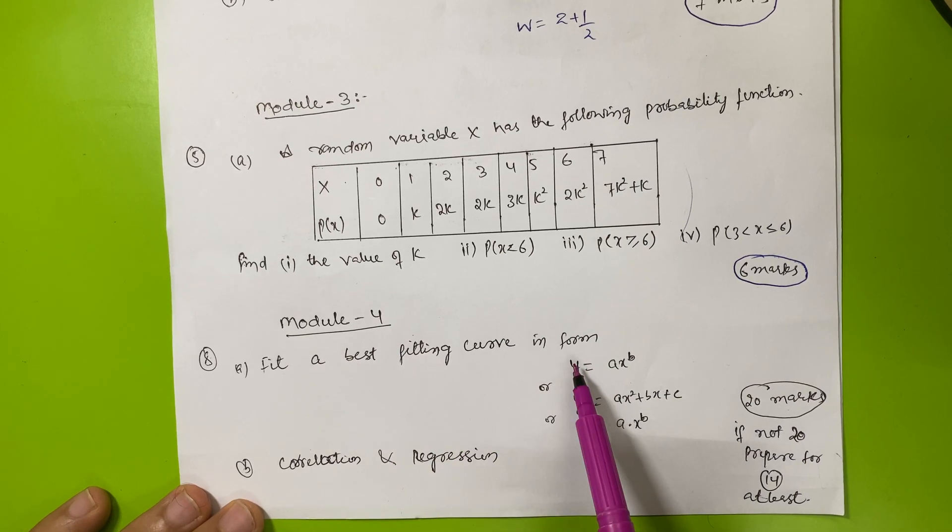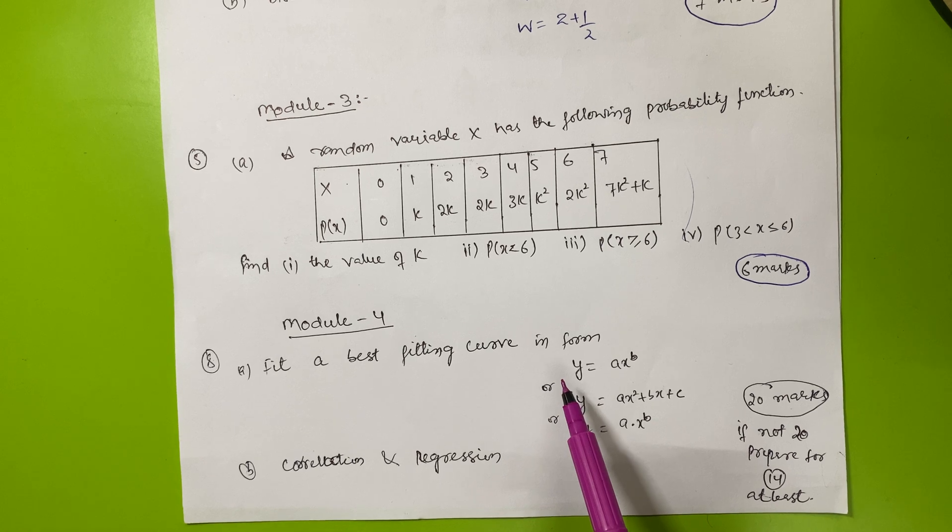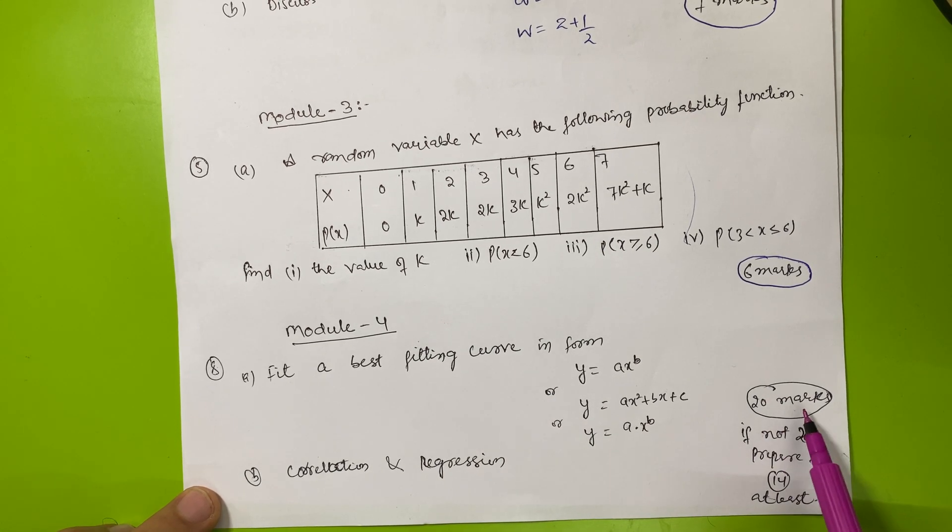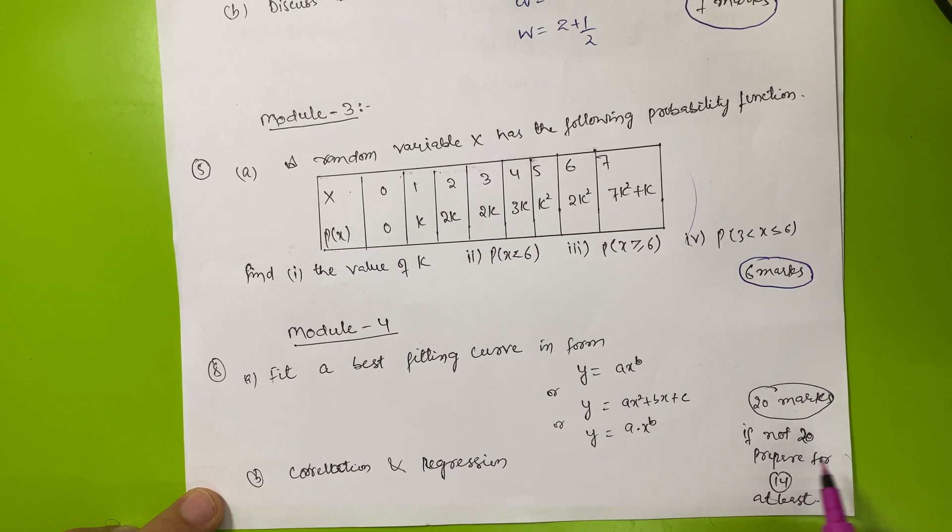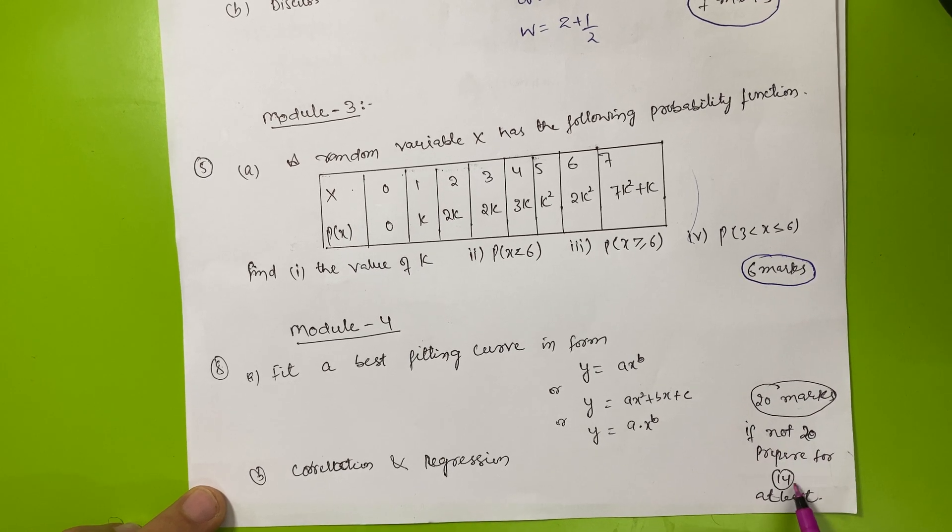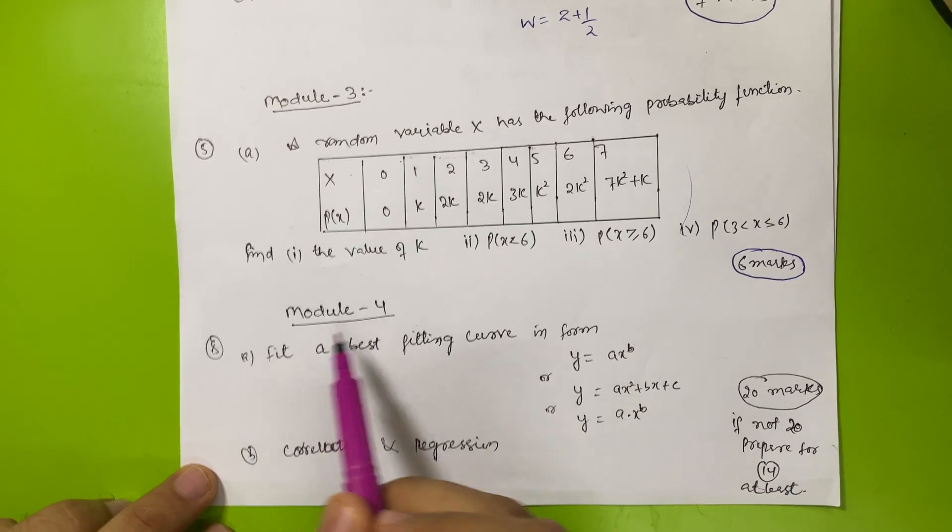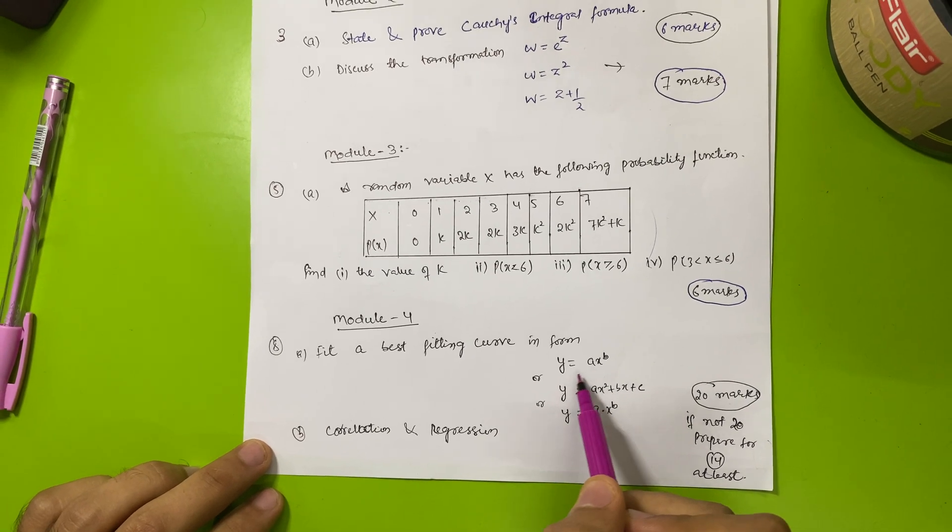Then module four comes. Like I mentioned in the earlier video, 20 marks are in your pocket from module four. Same here in the M4 subject, these 20 marks are in your pocket. If not 20, definitely you can prepare for 14 at least from this module.